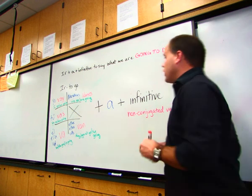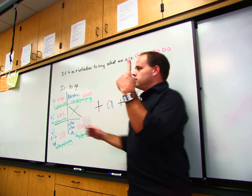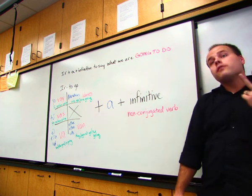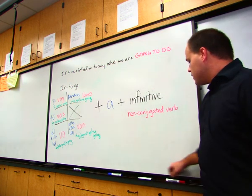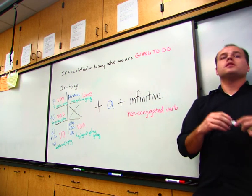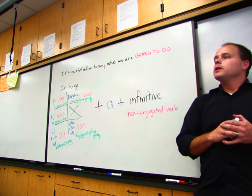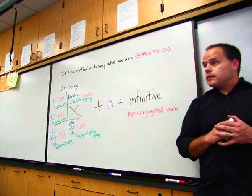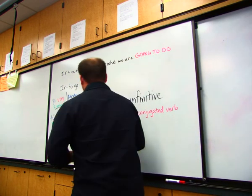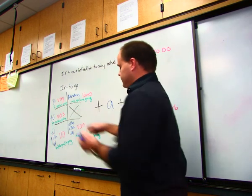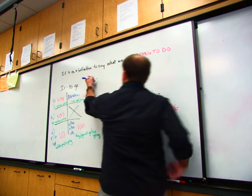Now look. How many verbs do we have in this? Two. Because of our two-verb rule, remember the first one's conjugated, so this one will not be. So for an example, is there something that someone in here is going to do today? What are you going to do? Sit. Okay, so she is going to sit. So, ella, right, because you're a girl. Ella va.